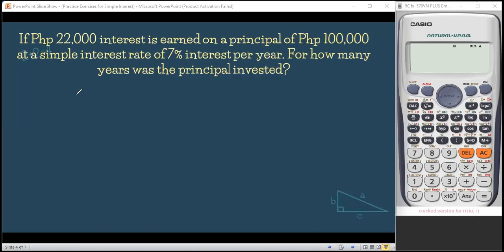For our second problem, if P22,000 interest is earned on a principal of P100,000 at a simple interest rate of 7% interest per year, for how many years was the principal invested? So the first thing we identify is what is being asked. So here the question is, for how many years was the principal invested? So meaning we are looking for the time in years. And also, identify the given.